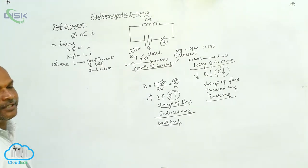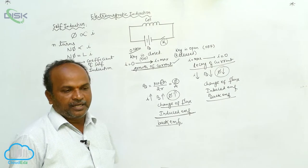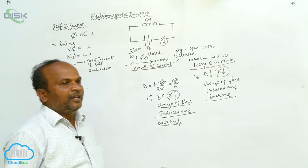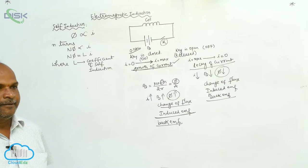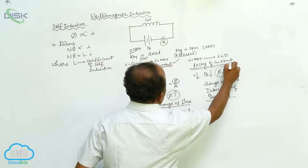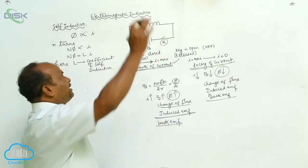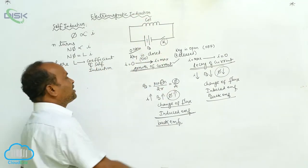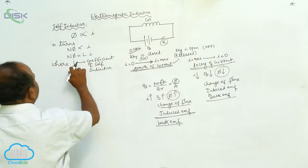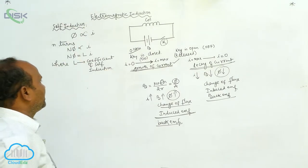What is the definition of self-induction? It is similar to inertia in mechanics. Whenever current is passing through a coil, there is sometimes a growth of current and sometimes a decay of current. The electrical property of the coil which opposes the growth or decay of current is called the coefficient of self-induction, or simply self-induction.